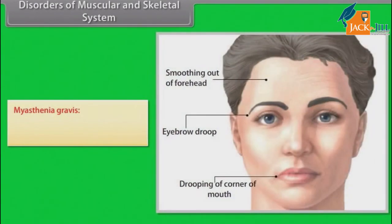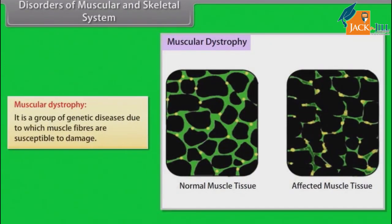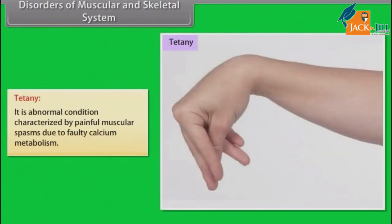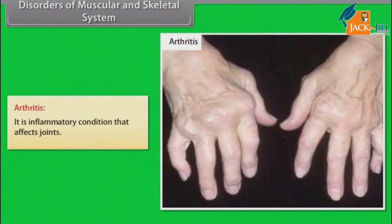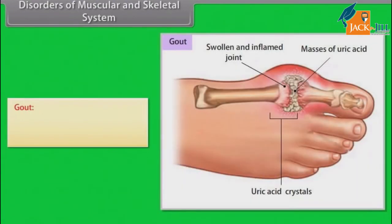Disorders of the muscular and skeletal system include: Myasthenia gravis, an autoimmune disease that causes weakness of muscles; muscular dystrophy, a group of genetic diseases in which muscle fibers are susceptible to damage; tetany, an abnormal condition characterized by painful muscular spasms due to faulty calcium metabolism; arthritis, an inflammatory condition that affects joints; osteoporosis, a disease in which bones become extremely porous and subject to fracture; and gout, acute arthritis that causes pain and swelling in the joints.